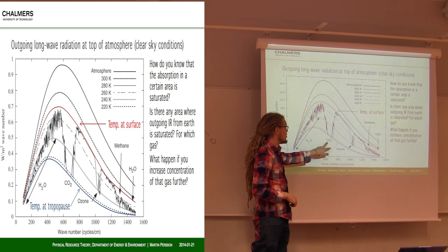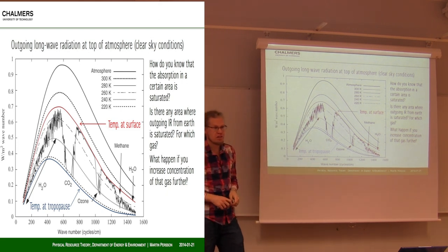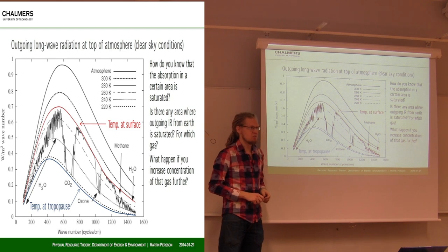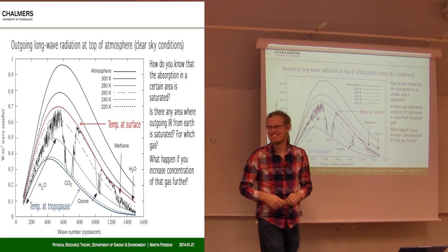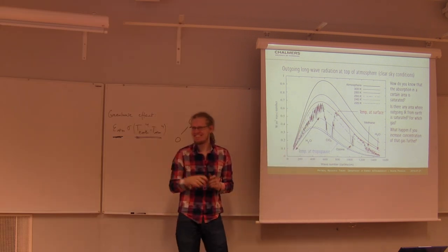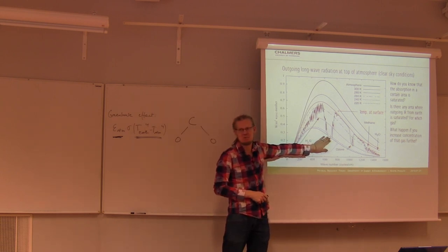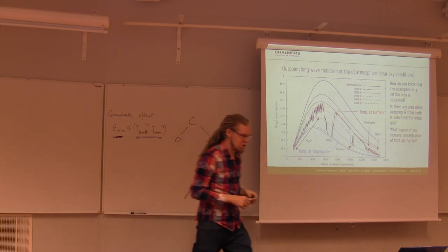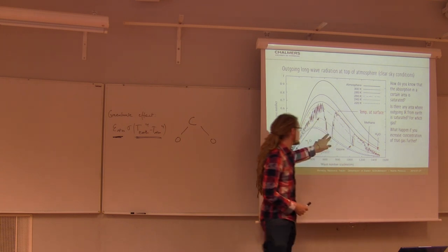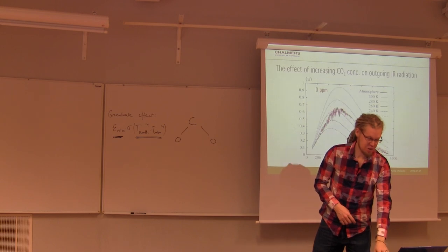So if carbon dioxide is already absorbing all the outgoing infrared radiation in its band, what happens if you increase it even more? If it already absorbs everything, how can it just absorb more? There are two things happening here.